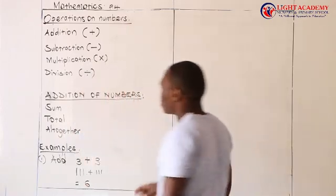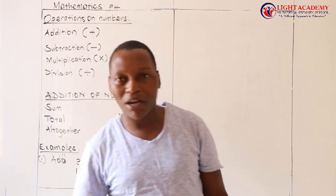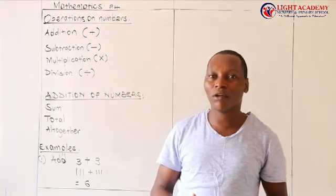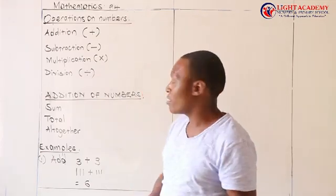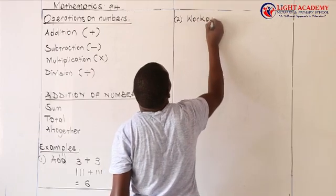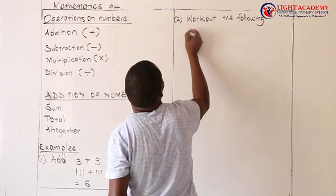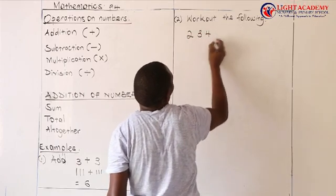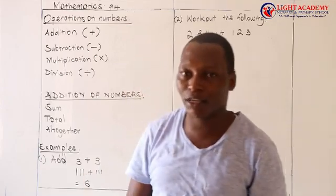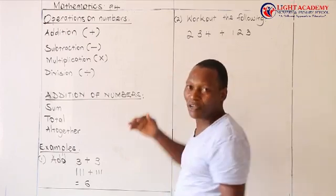However, since this is primary 4, we are going to change a little bit. The question might not basically come in that same order. In primary 4, we shall emphasize what we call place values. When we are adding numbers, we must be extra careful about arranging the digits in their right place values. For example, in primary 4 they can set a question like: 'Work out the following — 234 plus 123.' These are two numbers that we must add and get their total.